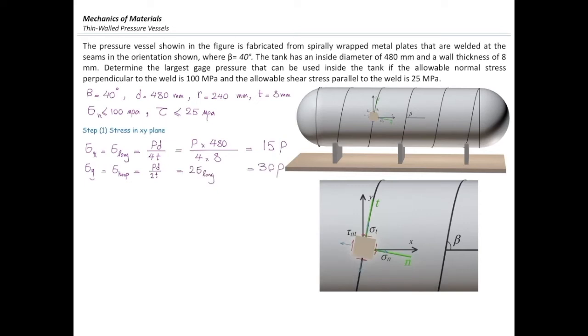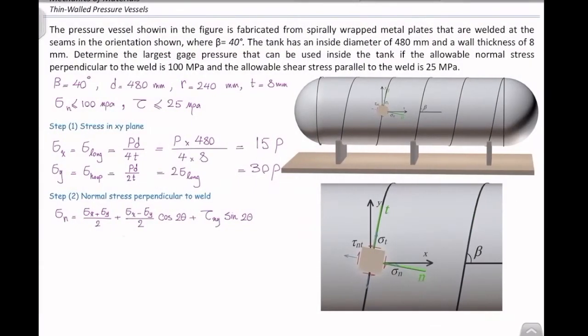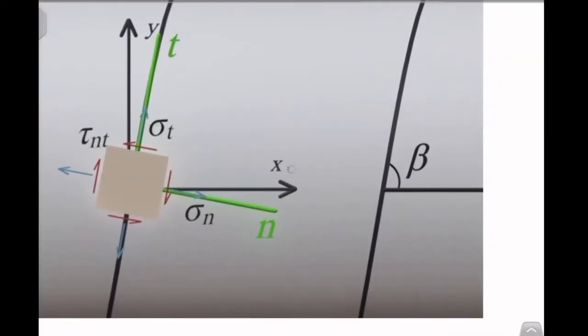Now, I'm going to rotate that element and determine stresses in the rotated plate. Rotate the element to get to that n direction. Start from x-axis. How much should we rotate that? Let me show it on the right side. I want to get to this plane. Should I rotate it by beta? It's 90 minus beta. That would be 50 degrees.